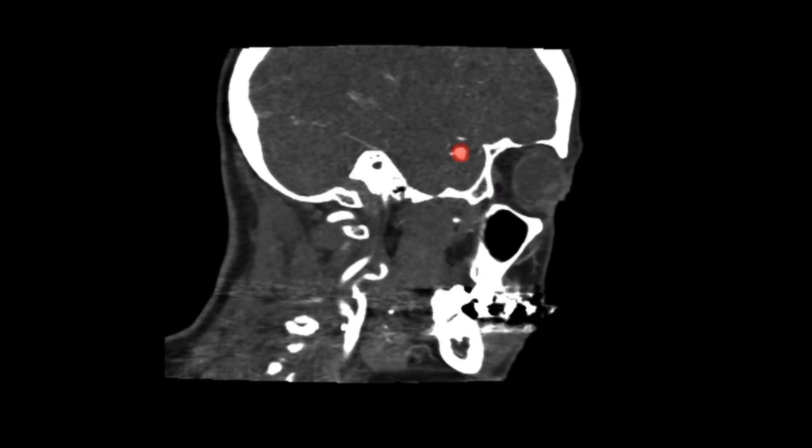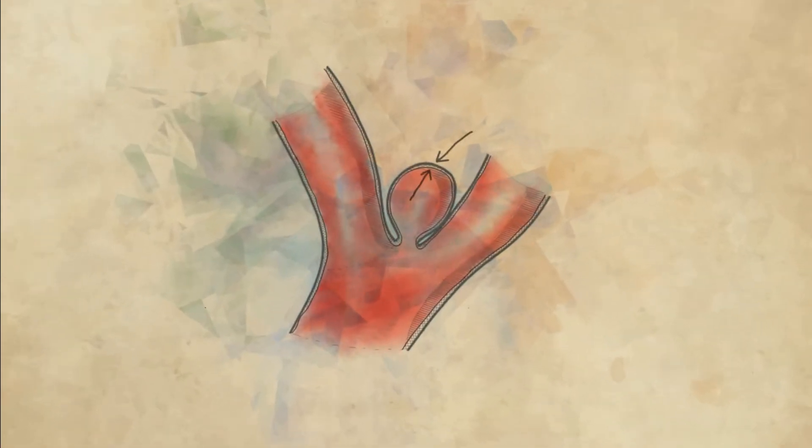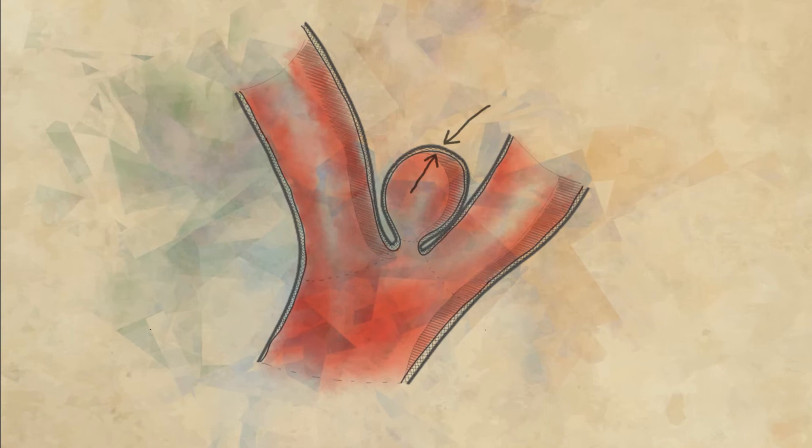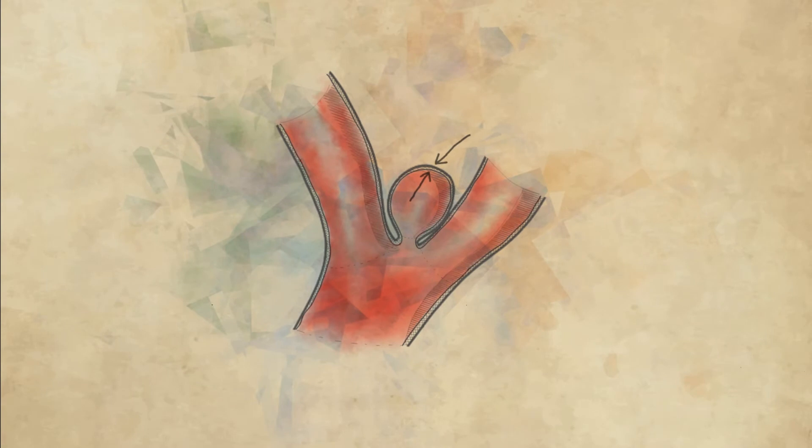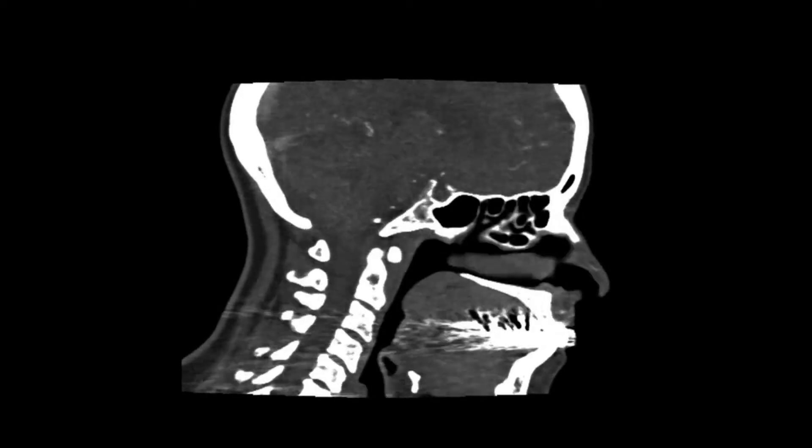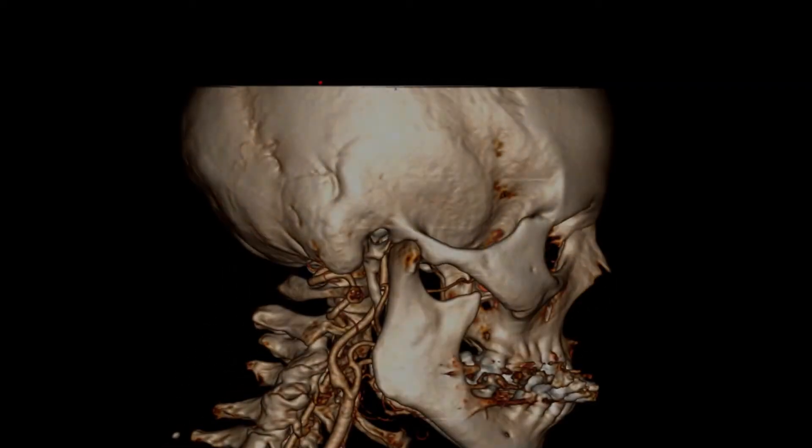Direct measurement of aneurysm properties such as wall thickness could help assess how vulnerable the wall is, but are difficult or impossible to obtain with current medical imaging techniques. We know that vessel walls react to blood flow patterns and that highly disturbed flow may make the wall weaker. Though we can't measure the blood flow dynamics directly, it's possible to replicate the dynamics through computer simulations.